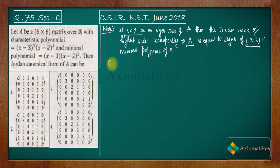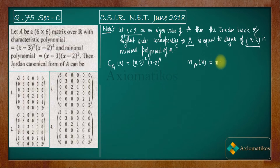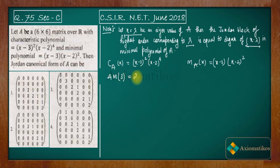What is given to us? A is a 6×6 matrix with characteristic polynomial (x−3)²(x−2)⁴ and minimal polynomial (x−3)(x−2)². Now, the algebraic multiplicity of eigenvalue 3 is 2 — that is how many times 3 is repeated in the characteristic polynomial. The algebraic multiplicity of eigenvalue 2 is 4.